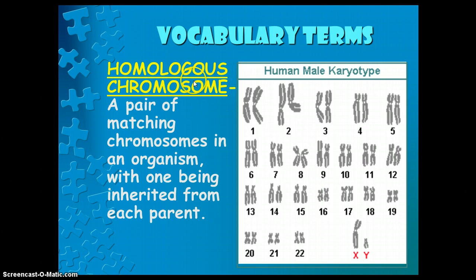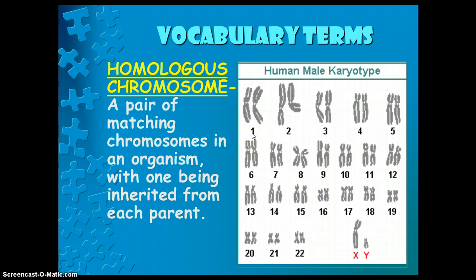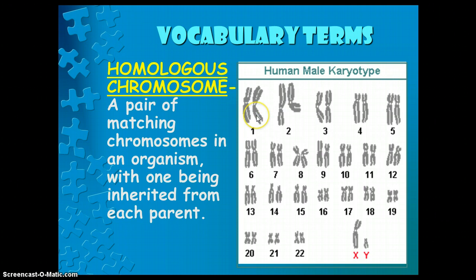Homologous chromosomes are a pair of matching chromosomes in an organism, with one being inherited from each parent. We have chromosomes 1 through 23, and the 23rd pair is our sex chromosomes, which determine if we're a boy or a girl. We're going to have pairs of each chromosome 1 through 23 — one inherited from our mom and one from our dad, but they're going to be the same type of chromosome.